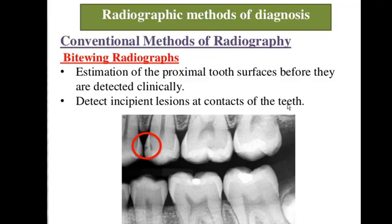Bitewing radiographs allow estimation of proximal tooth surfaces before caries are detected clinically, and can detect incipient lesions at contacts of teeth. You can detect caries at their very beginning — incipient areas — using bitewing radiographs.